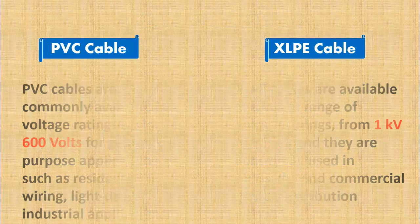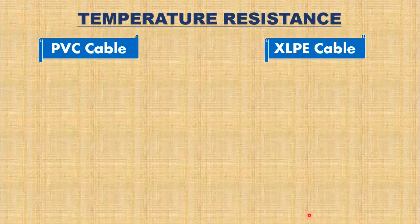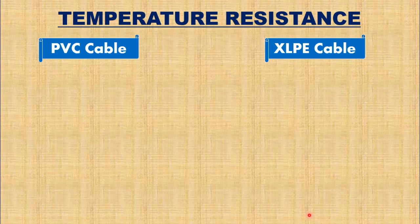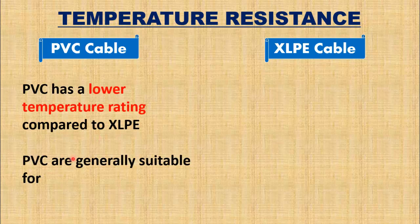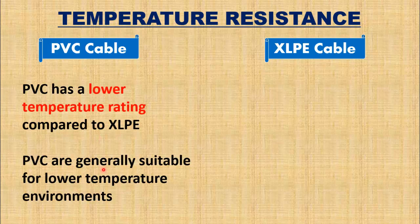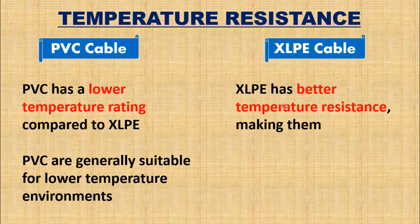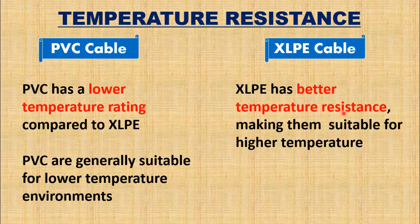Another difference is based on temperature resistance. PVC has a lower temperature rating compared to XLPE. PVC cables are generally suitable for lower temperature environments such as indoor and underground installations. Whereas XLPE cable has better temperature resistance, making them suitable for higher temperature applications.